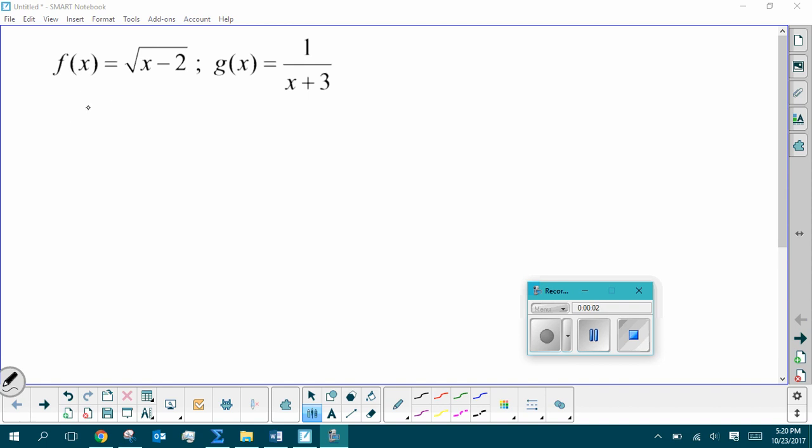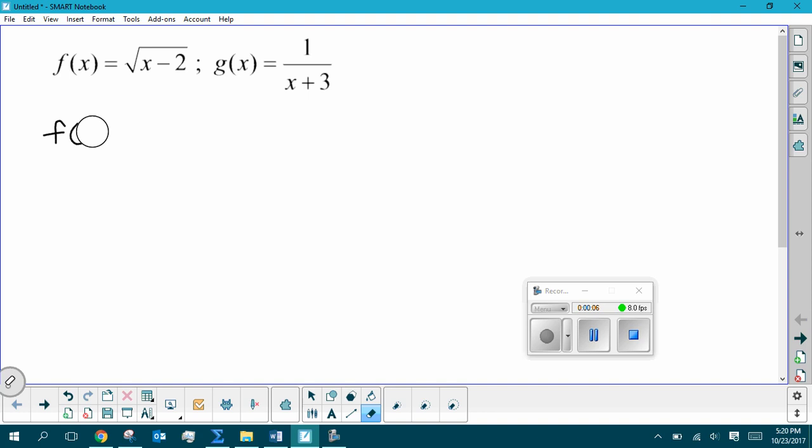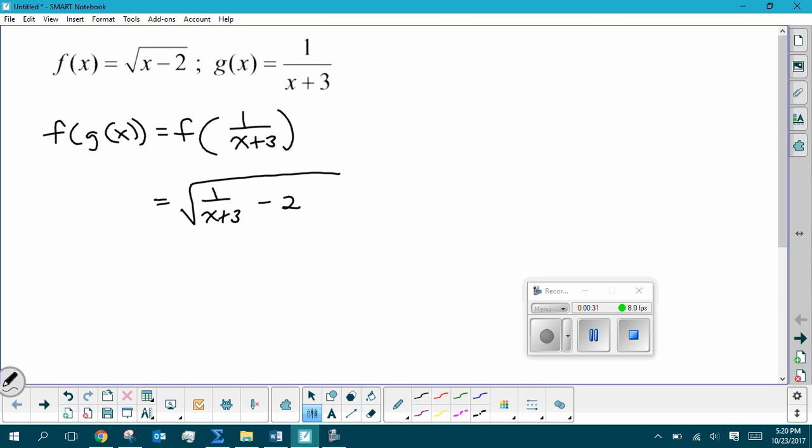All right, so in this one, guys, I want to talk about the domain of the composite function f of g of x. That's going to look initially like f of 1 over x plus 3. Now I'm going to replace that 1 over x plus 3 into the square root function. So it's going to look something like 1 over x plus 3 minus 2. You can simplify that, but that's ultimately f composite g of x.